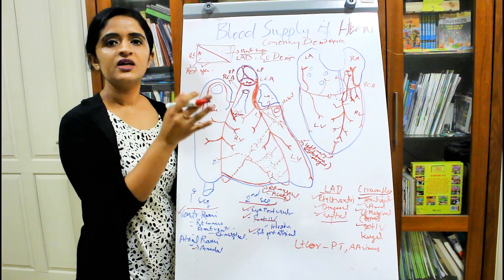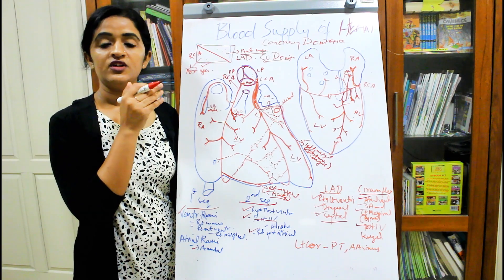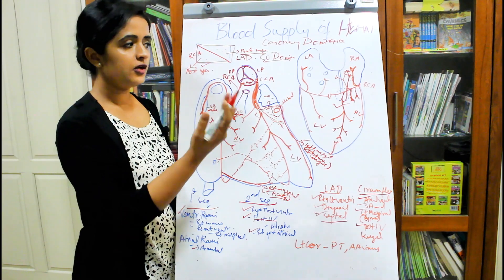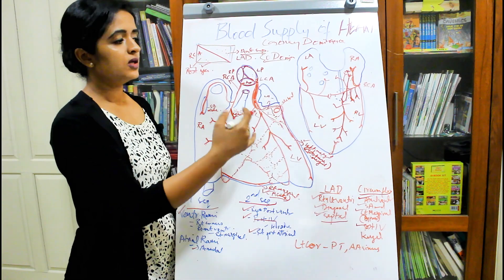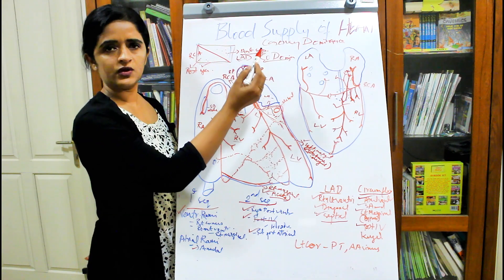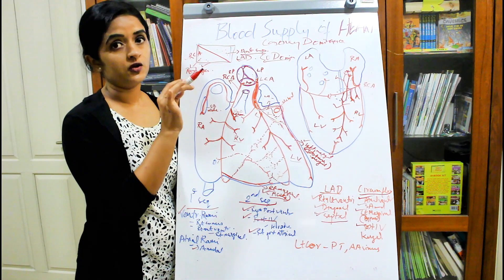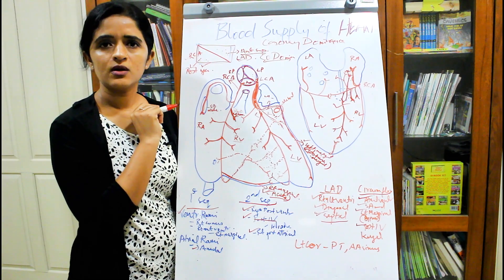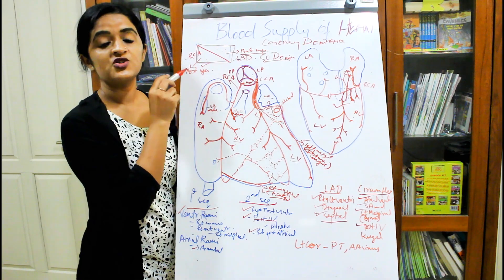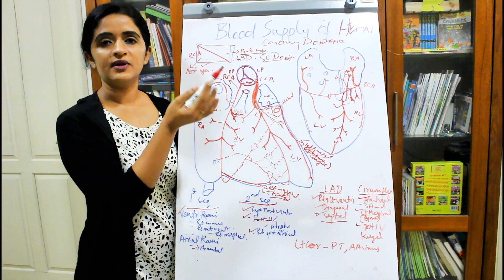Which type is most dangerous — right, left, or co-dominance? In right coronary dominance, the anterior two-thirds of the interventricular septum is supplied by the left coronary, while the posterior inferior aspect is supplied by the right coronary, because the posterior interventricular branch is a branch of the right coronary. In left coronary dominance, the anterior two-thirds is supplied by the left coronary, and the posterior interventricular branch also comes from the left coronary, so the posterior inferior aspect of the interventricular septum is also supplied by the left coronary.